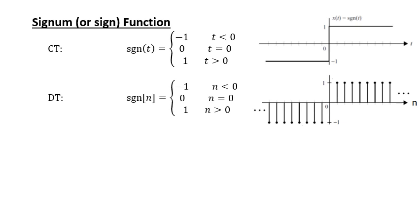The first signal we are going to discuss is the signum or sign function. It is defined both in the discrete time case and continuous time case. It is represented by 'sgn'. In the continuous time signal we write the parenthesis with independent variable t, whereas in the discrete time case the argument is written in square brackets with n, since n signifies a discrete time signal while t has continuous values.